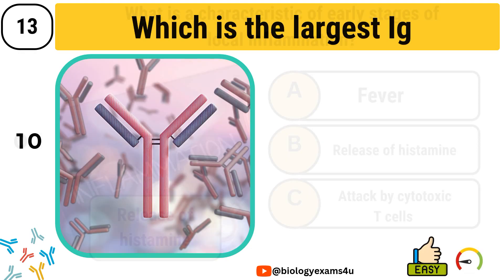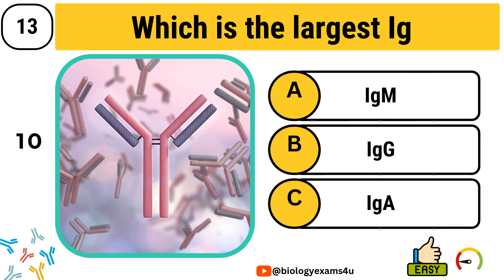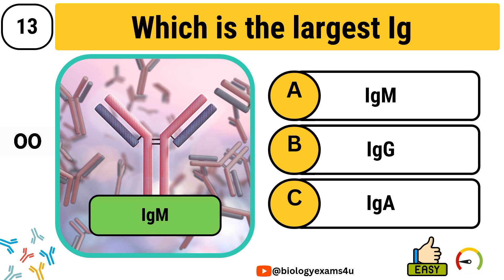Question number 13. Which is the largest immunoglobulin? Option A, IgM. Option B, IgG. Option C, IgA. The correct answer is IgM.